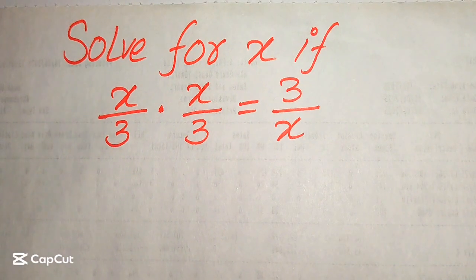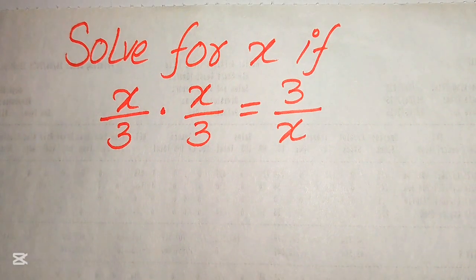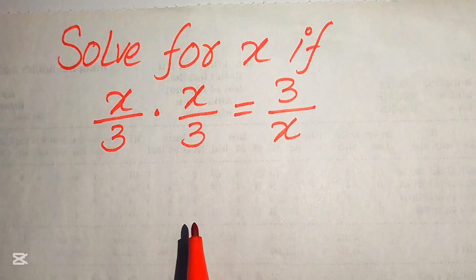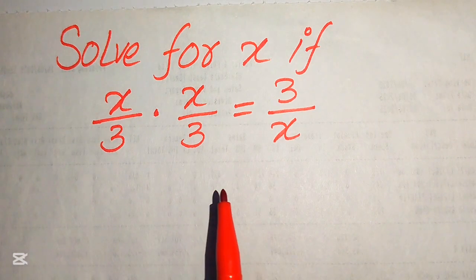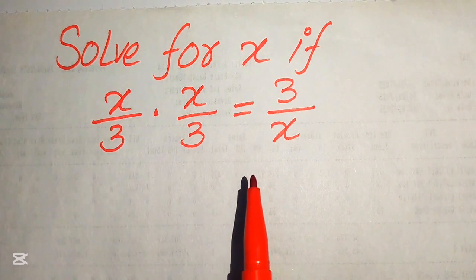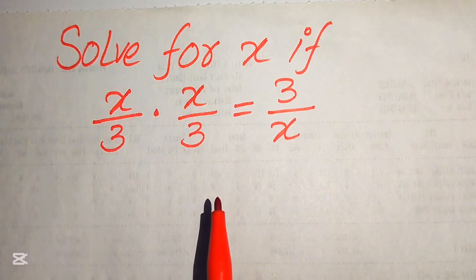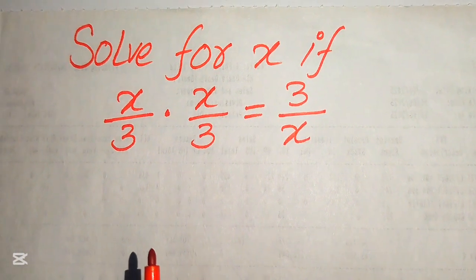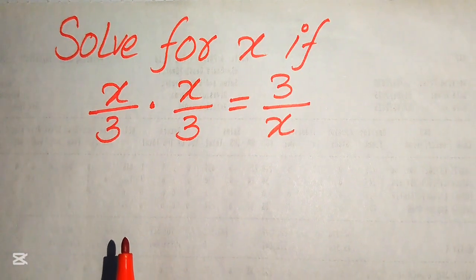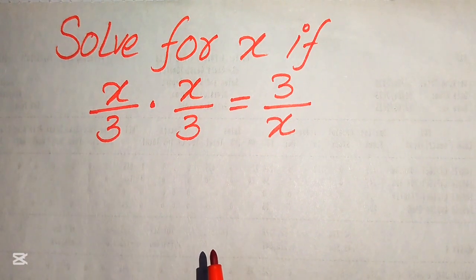Hello everyone, welcome to solving this nice math Olympiad algebra problem. We have (x/3) multiplied by (x/3) equals 3/x, and we will solve this for the values of x. I hope you like this method, but if you have any other method in mind, please don't hesitate to write it in the comment section.